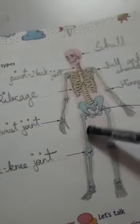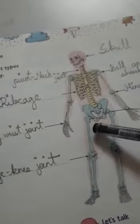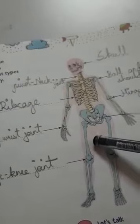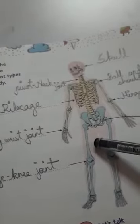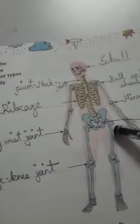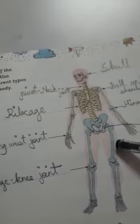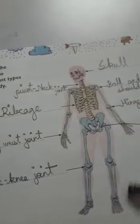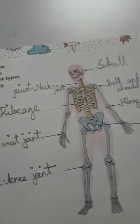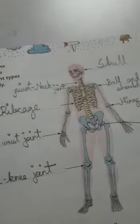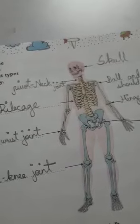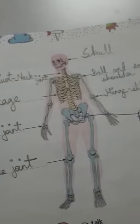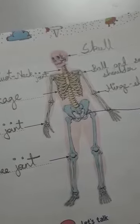Above the hinge joint there is the thigh bone. This is the longest bone in our body and its name is femur. The upper leg and the lower leg are joined together at the knee. The upper leg is the thigh, which has the longest bone in our body called the femur. The lower leg has two bones.